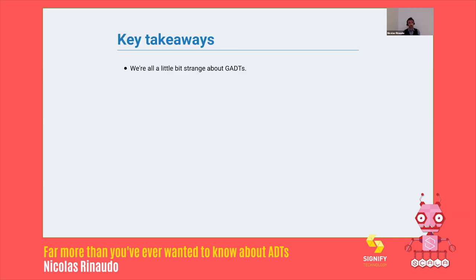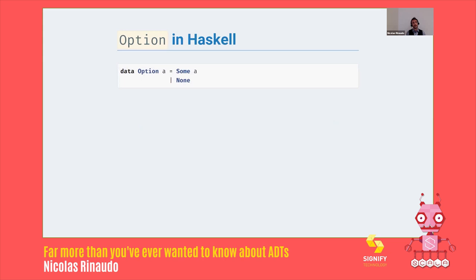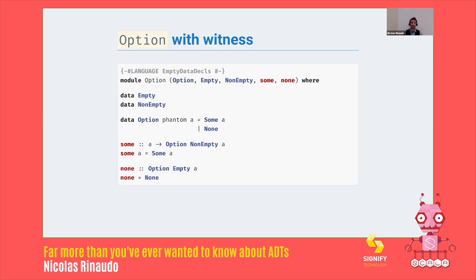In conclusion, we're in the Scala community all a bit strange about GADTs, but they have an actual easy-to-understand definition — it's just that Scala is really bad at helping us see it. But if Scala is so bad at it, how about some Haskell? Because Haskell makes it a lot more obvious. In Haskell, option of A is either a Some of A or a None. But critically, Some and None here are not types — they're just functions that given an A return an option of A, or return a None. So you can't write safeGet because you don't have a type to mean non-empty option. That does not exist.